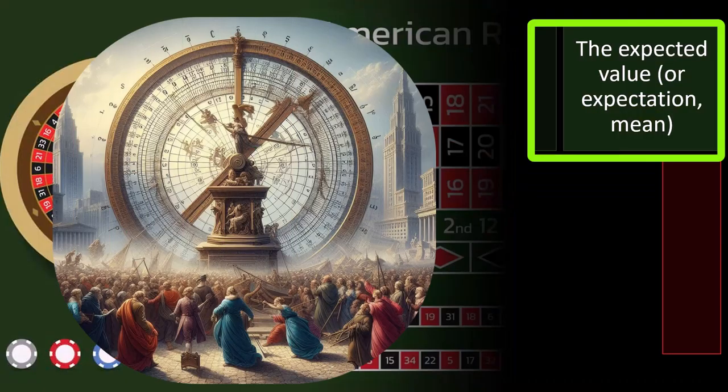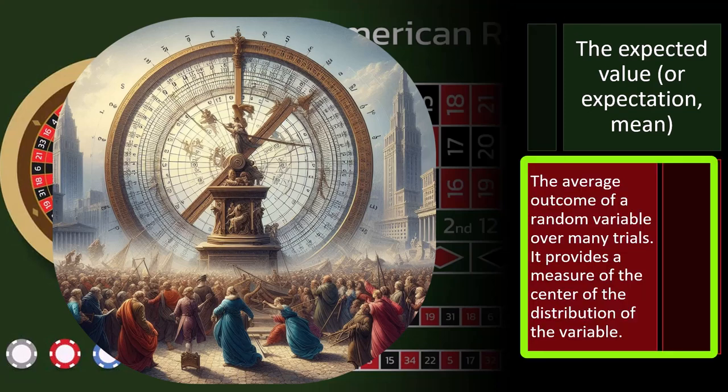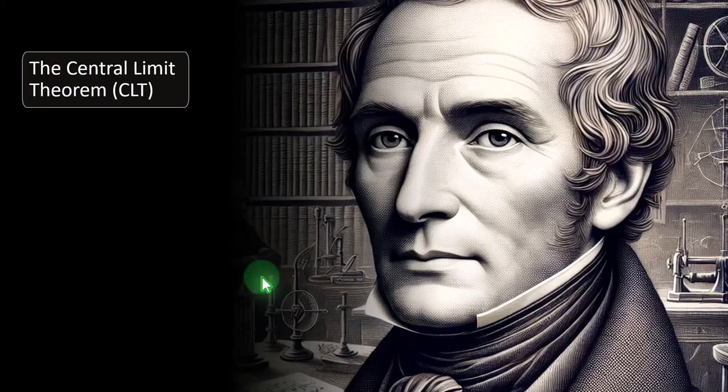Expected value, or the expectation mean: the average outcome of a random variable over many trials. It provides a measure of the center of the distribution of the variables, and is a core concept in casino games, investing, and many areas of probability. The idea is that I can't know what's going to happen in one roll of the roulette wheel, but I can predict with some certainty what will happen if repeated over a long period of time — giving us our expected value. As we saw with Pascal's Wager, two things matter: the likelihood of something happening, and what the payout matrix looks like — what it costs versus the benefit if the event occurs.